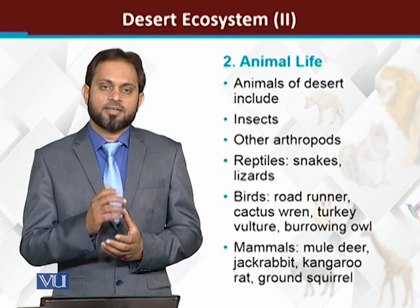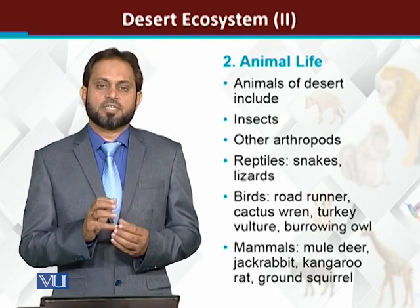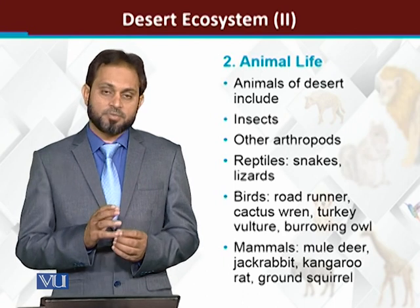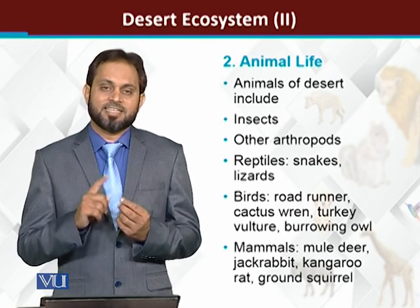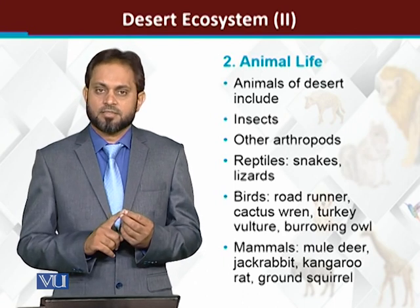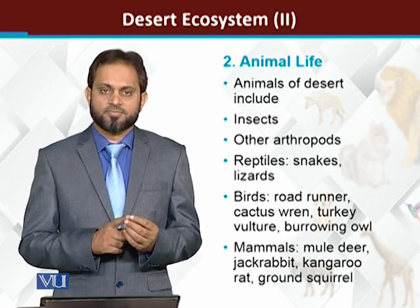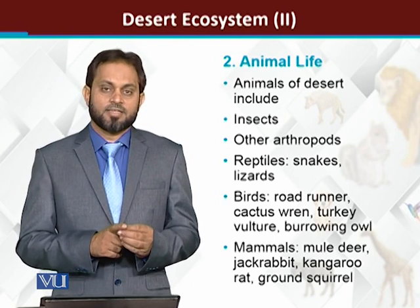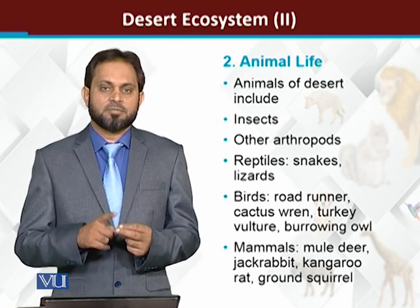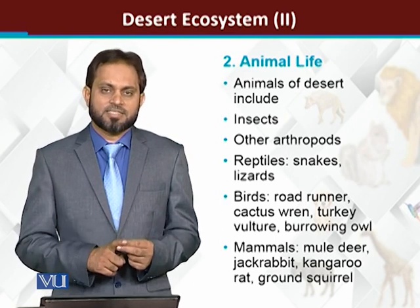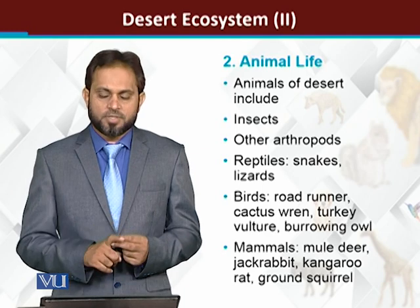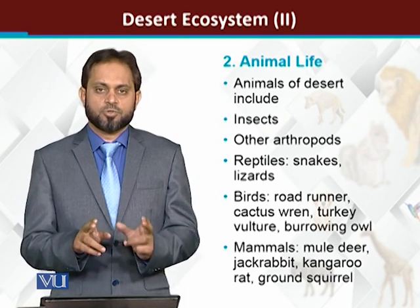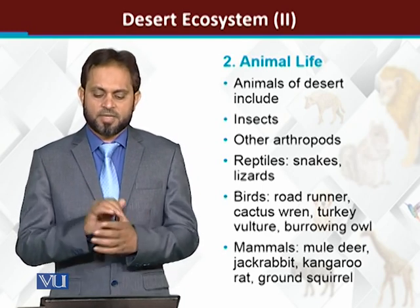Important desert animals include different types of arthropods. Among the arthropods there are insects — a variety of insects are there. The other group is different types of arachnids: arachnids means spiders are there, scorpions are there. So this gives us different types of arthropods that we find in the desert.